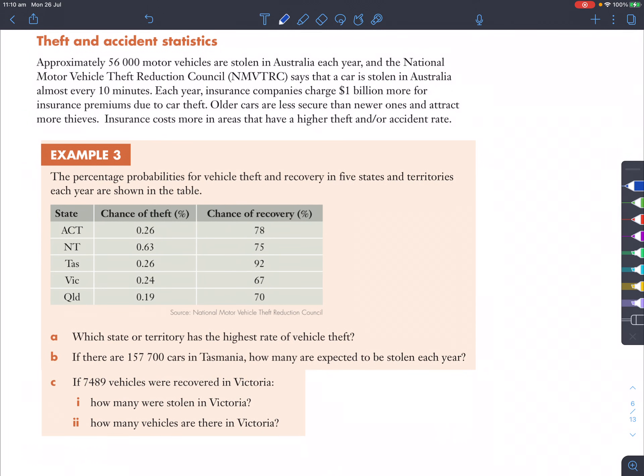Now, moving on to the next part. Theft and accident statistics. So, you know that around the world people would be thieves and steal cars if possible, and that would affect insurance, right? Now, the thing is, out of this paragraph, the most important thing is a car is stolen in Australia almost every 10 minutes. That's an important statistic to know, and that's overall in Australia and may not apply to your suburb, but just keep that in mind.